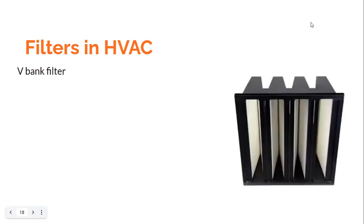The next type is the V-bank filter. This construction type houses a number of mini pleat filters in a V-shaped arrangement. Look at the diagram and you will see that this is a V-shaped arrangement for housing the filters. A number of mini pleat filters are housed in this V-type construction, which gives it the name V-bank filter. The advantage of this filter is that it has a higher handling capacity for a given delta P — that is, differential pressure rating.